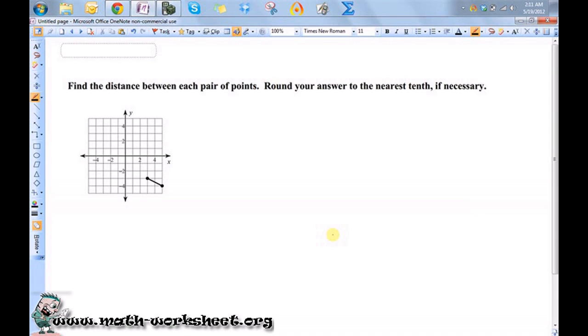If I want to find the distance between these two points, the first thing I should do is actually write the coordinates of them. The coordinates of this first point would be 3, negative 3, and this point would be 5, negative 4.